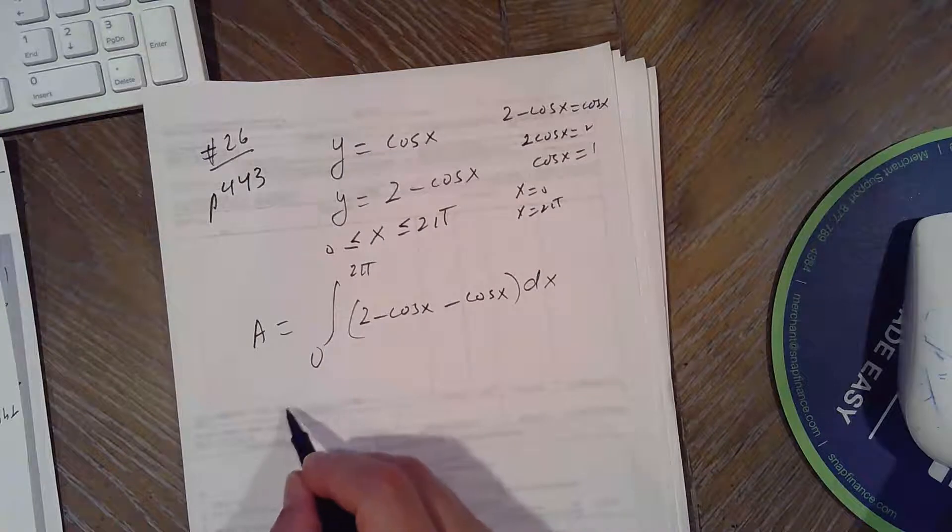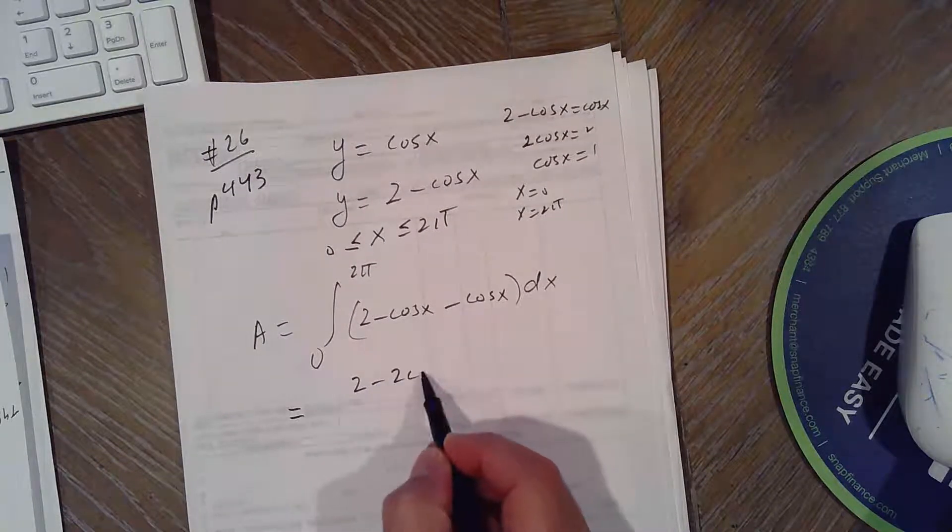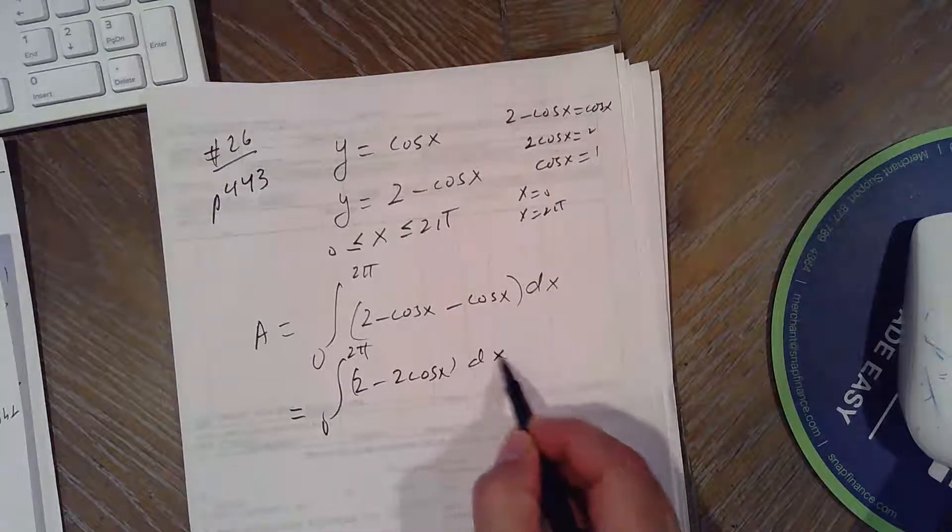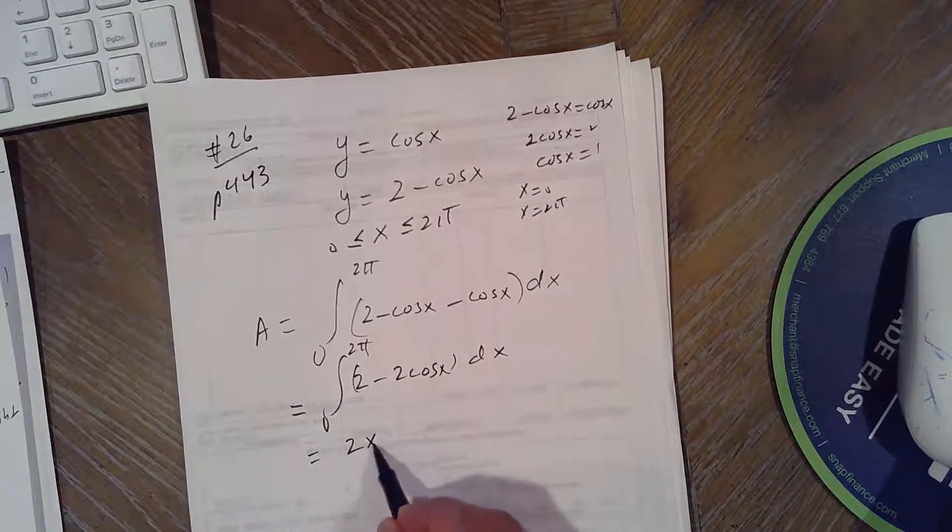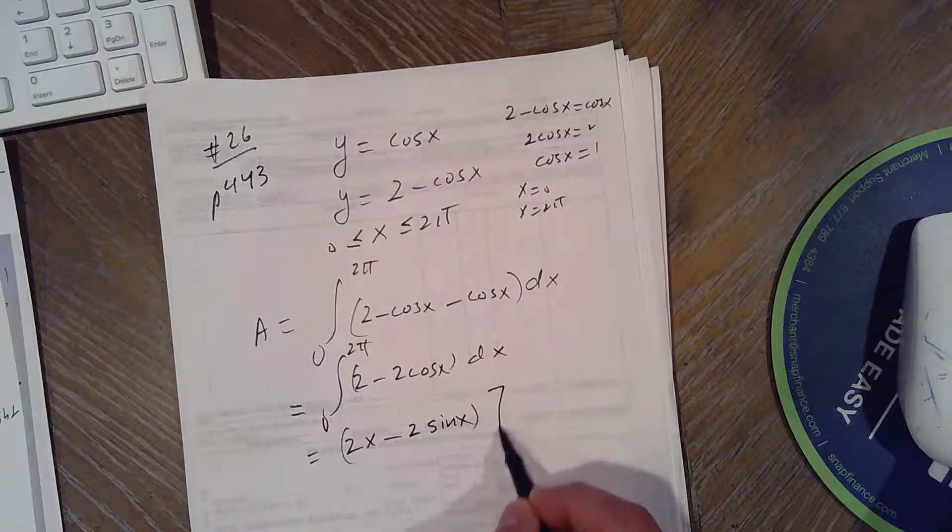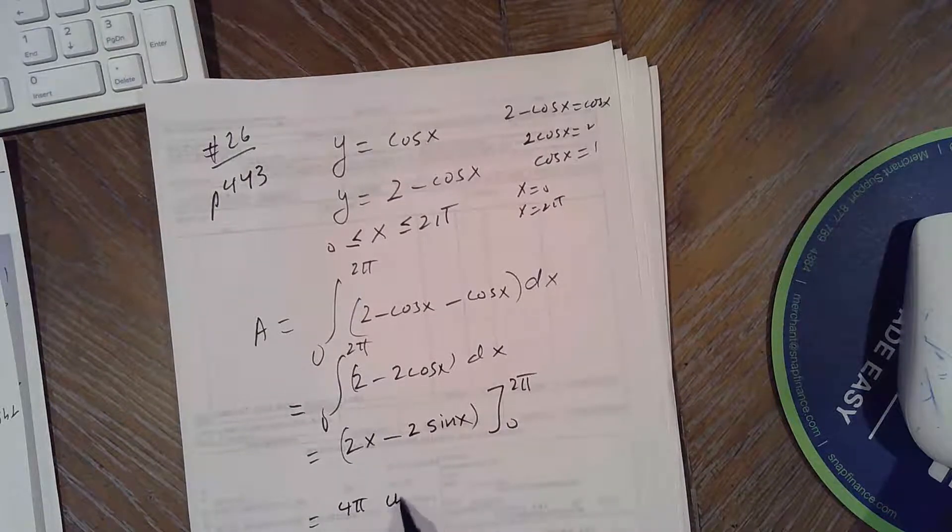Okay, so when you integrate this, it would be 2X minus 2 sine X from 0 to 2π. Integral of 2 DX is 2X, integral of negative 2 cosine X is minus 2 sine X, between 0 and 2π, and you end up with 4π square units.